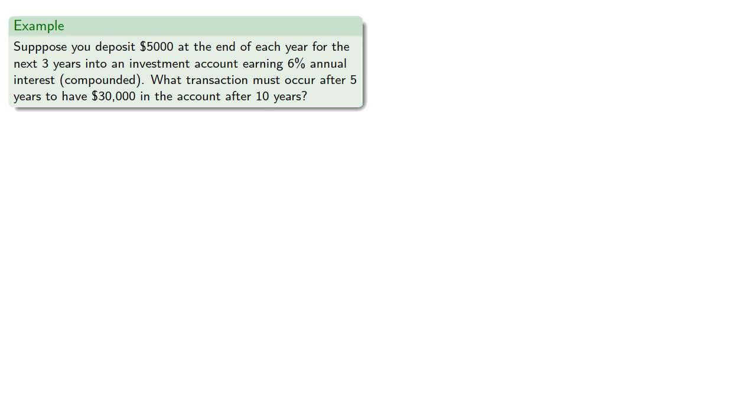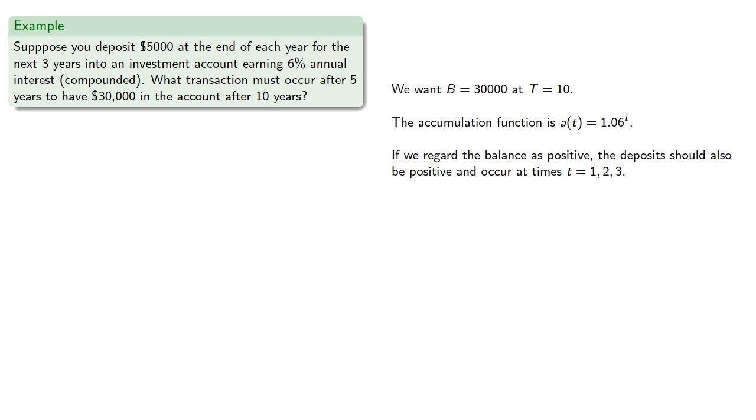Suppose you deposit $5,000 at the end of each year for the next 3 years into an investment account earning 6% annual interest compounded. What transaction must occur after 5 years to have $30,000 in the account after 10 years? Here, we want the balance to be 30,000 at t equals 10.